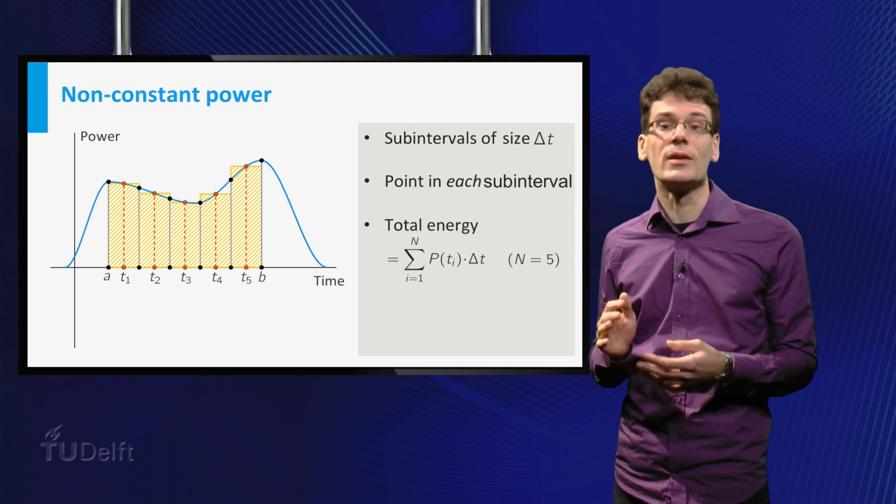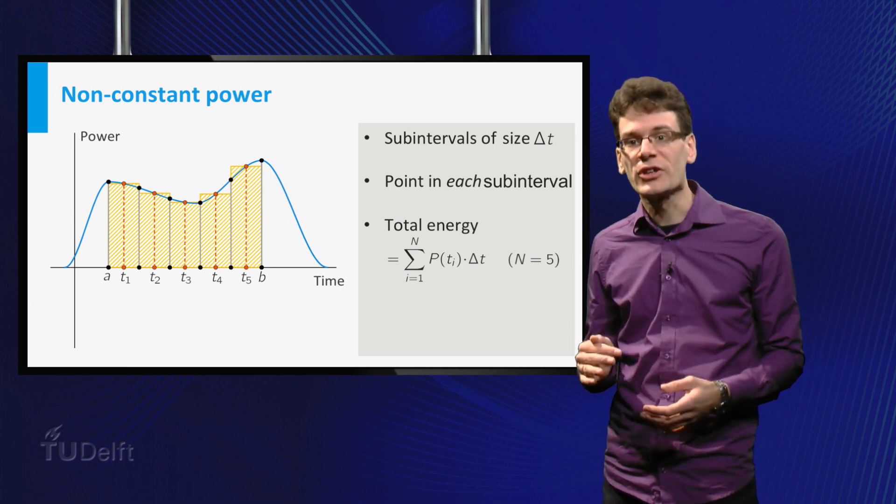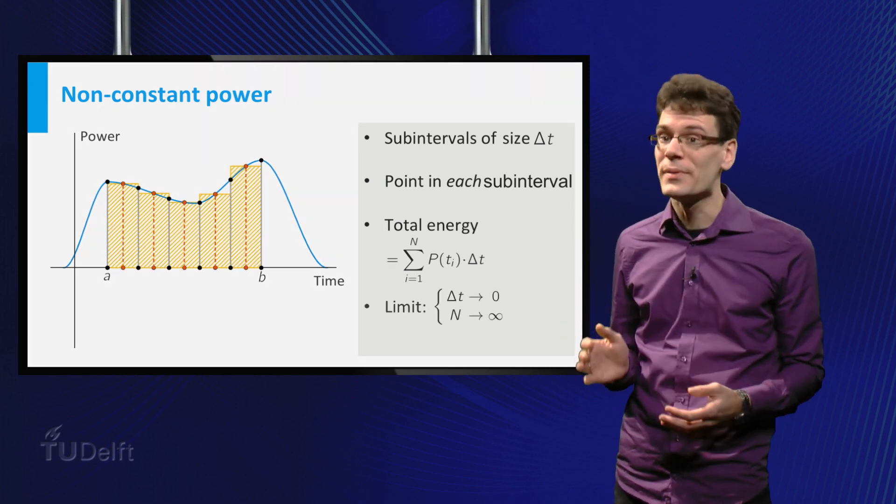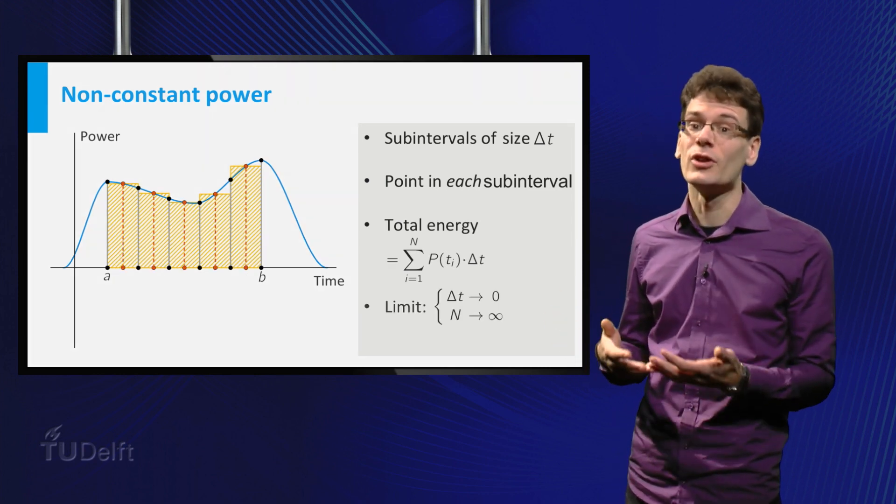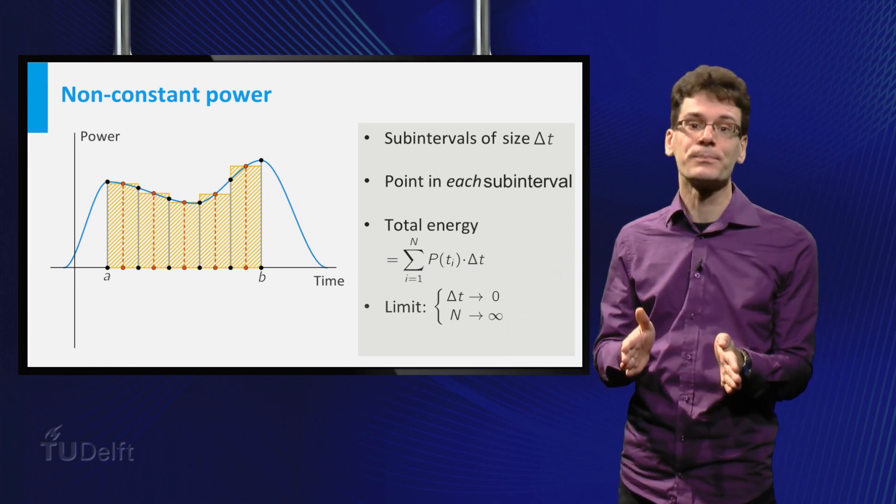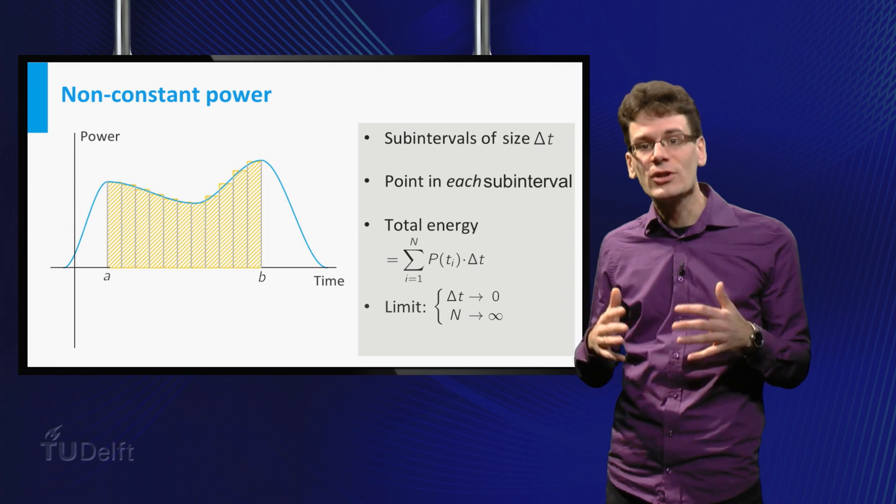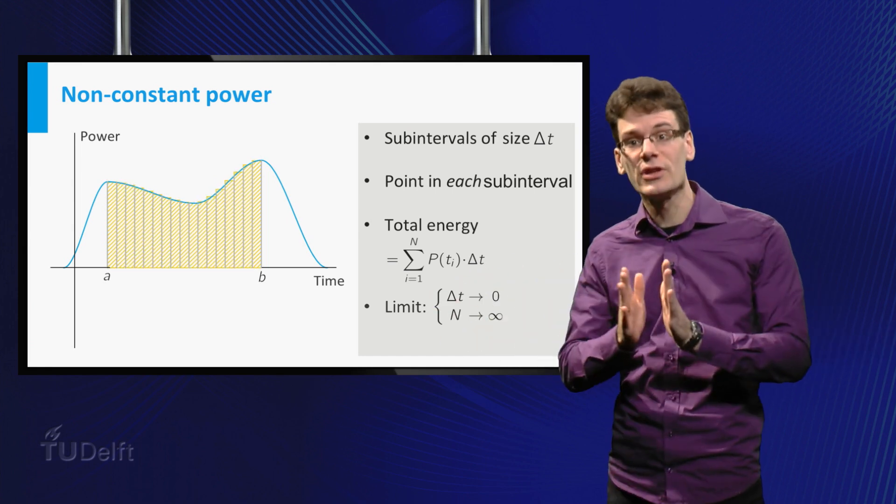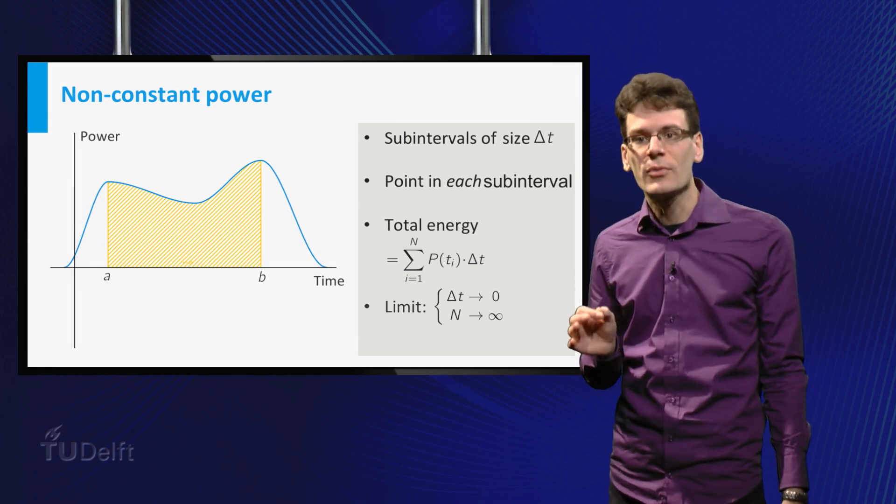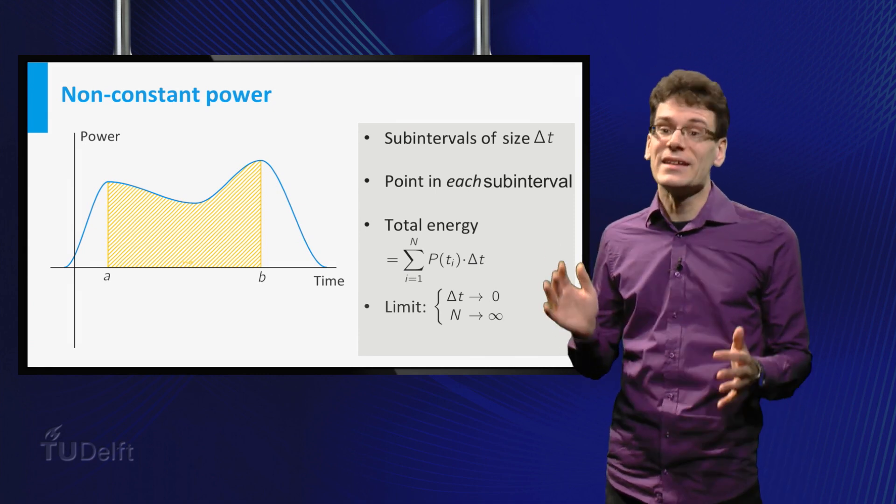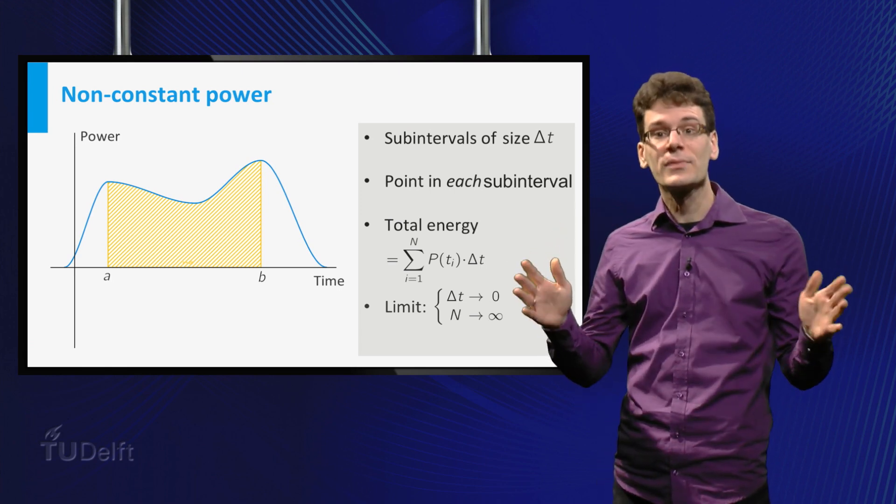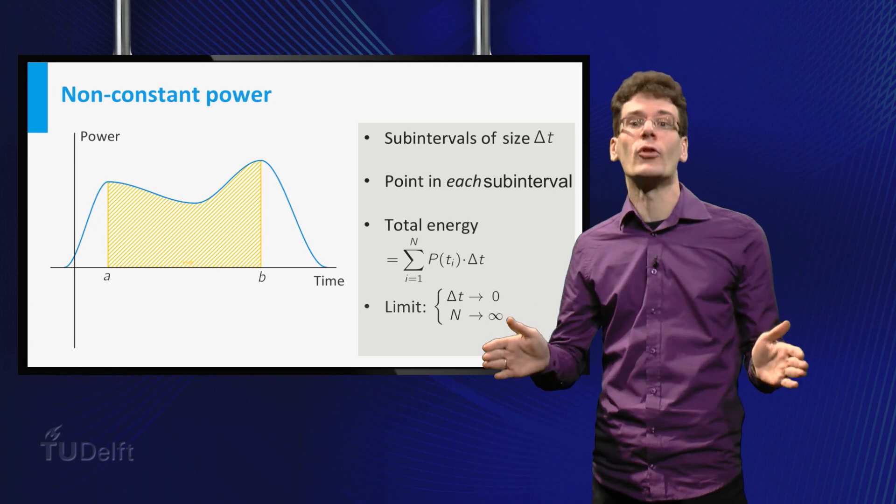Of course, this is still an approximation; the power is not constant on every interval. But to make the approximation better, we can repeat the whole procedure for a larger number n of subintervals, each with smaller length delta T. In the limit that n goes to infinity and delta T goes to zero, we will obtain the exact energy consumption. This number also has a geometric meaning; in this case it is the total area between the graph of the function P and the interval from A to B on the horizontal axis.